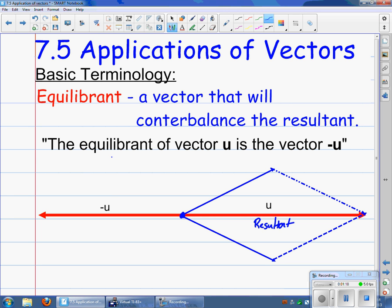Now, an equilibrium is going to be this vector here. If this is vector u, the equilibrium is a vector opposite of u, or negative u, which means that an equilibrium is just the vector that is the opposite of the resultant.